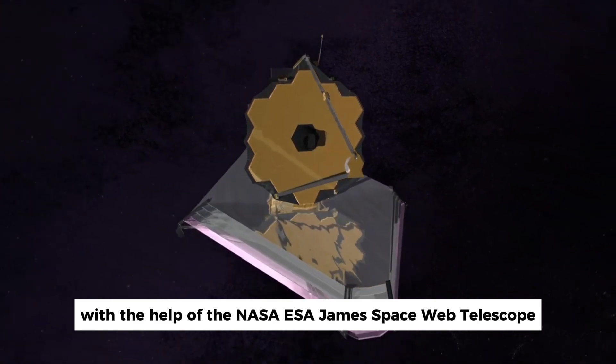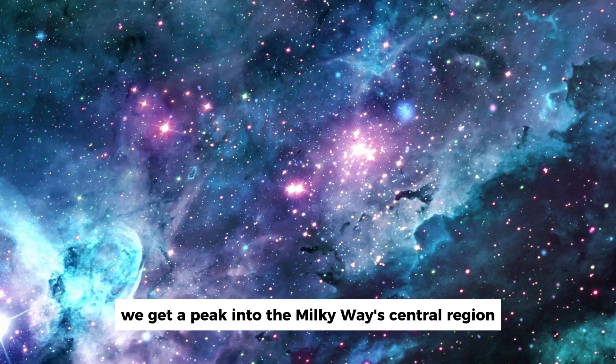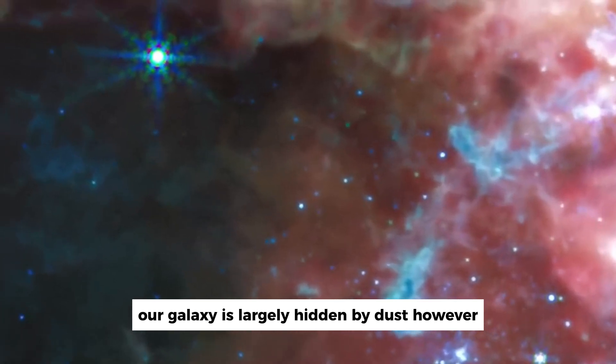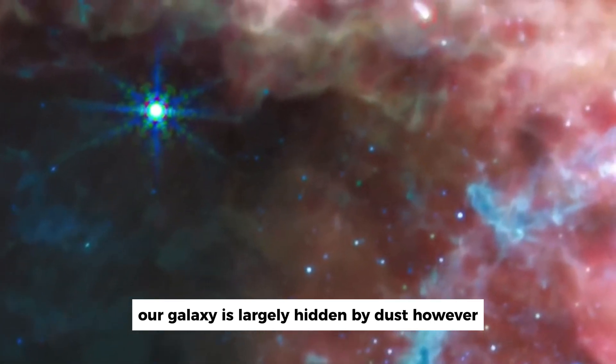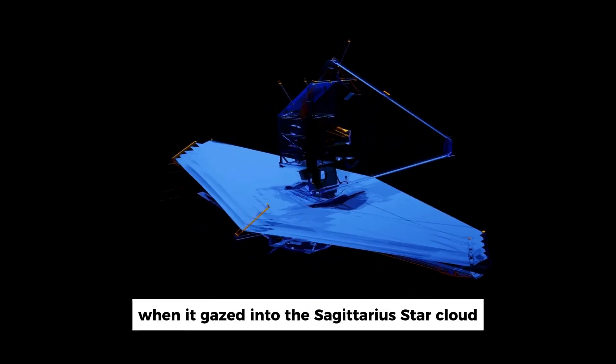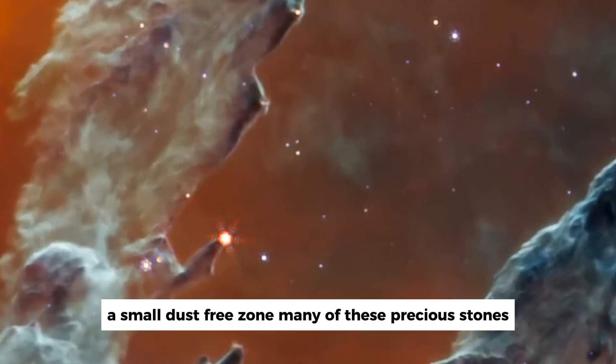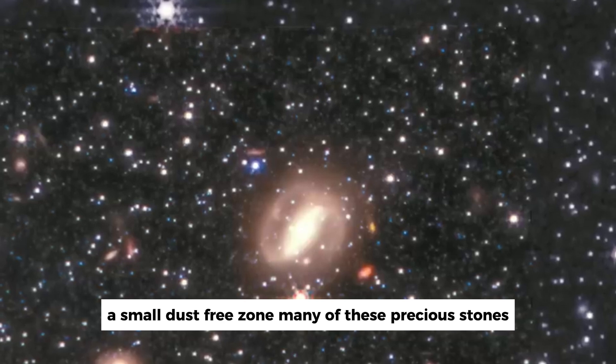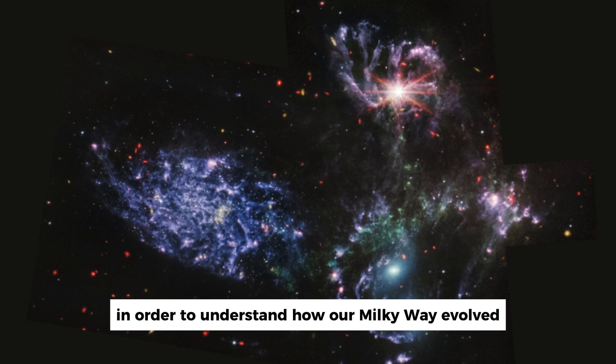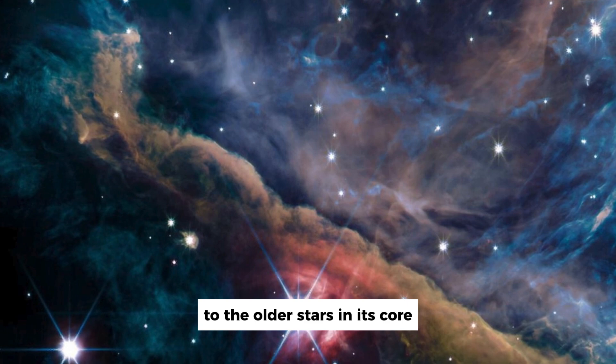With the help of the NASA ESA James Space Webb Telescope, we get a peek into the Milky Way's central region, where an incredible number of stars live. Our galaxy is largely hidden by dust. However, this amazing view of a trove of stars was captured by Hubble when it gazed into the Sagittarius star cloud. A small dust-free zone, many of these precious gems are among the oldest life forms in the Milky Way. In order to understand how our Milky Way evolved, astronomers have turned their attention to the oldest stars in its core.